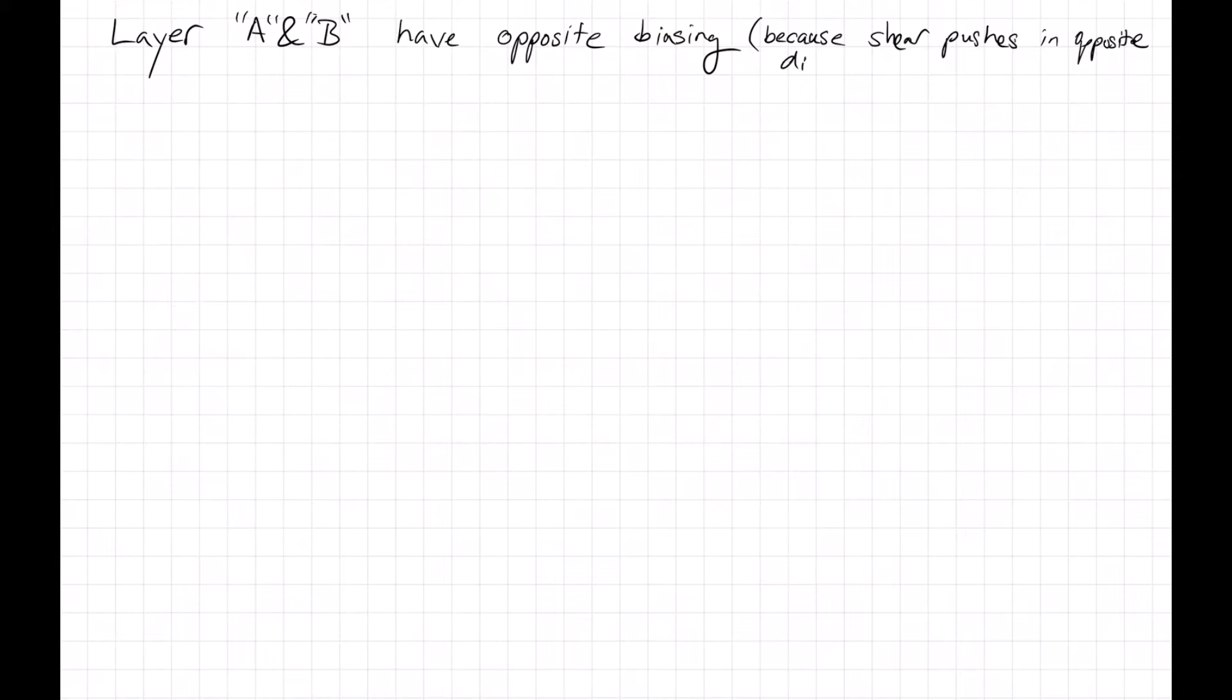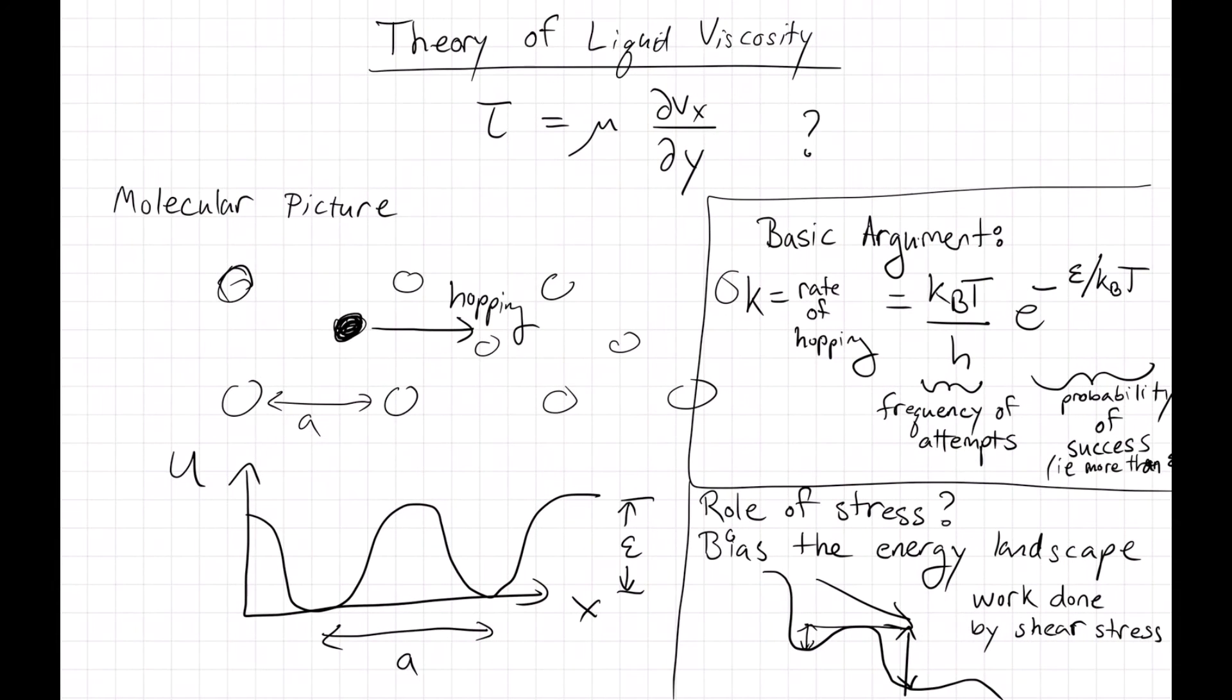layers A and B are being biased in the opposite direction. So B is being driven to the left, and A is being driven to the right. So this is my schematic, and I'm circling the two layers here.